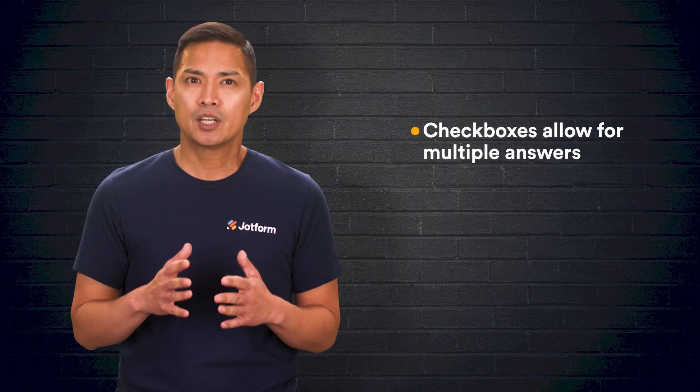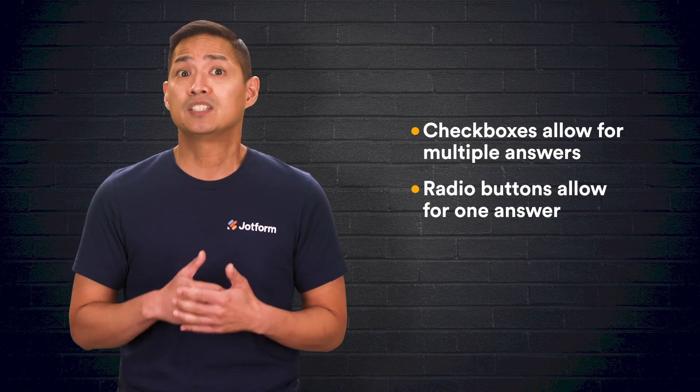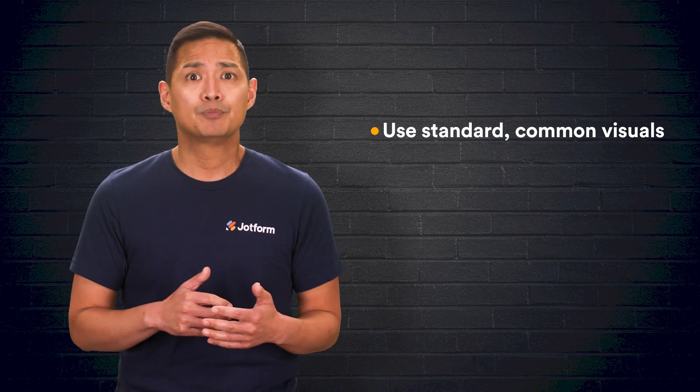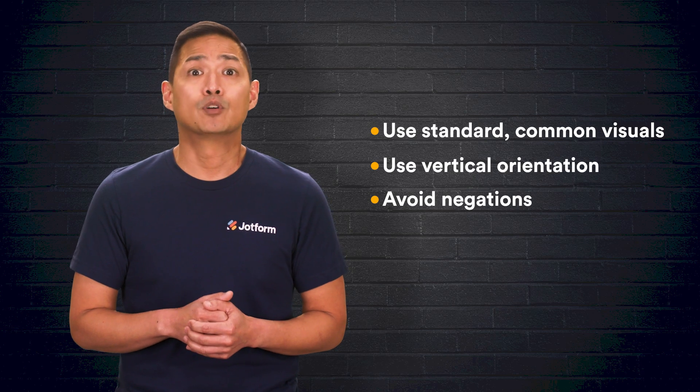There you have it — all the ins and outs of checkboxes versus radio buttons and how to add them to your survey forms. Now you'll be better equipped to use them correctly and collect valuable, actionable feedback. Let's review: the main difference between checkboxes and radio buttons is that checkboxes allow for multiple answer responses, whereas radio buttons allow for only singular answer responses. Here are three best practices: one, use standard common visuals; two, use vertical orientation; and three, avoid providing answers in the form of negations.